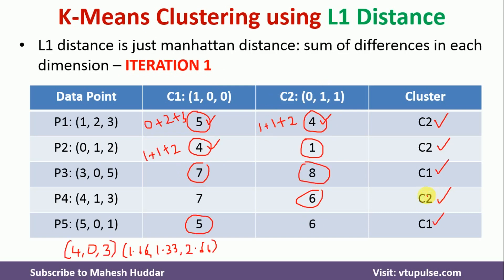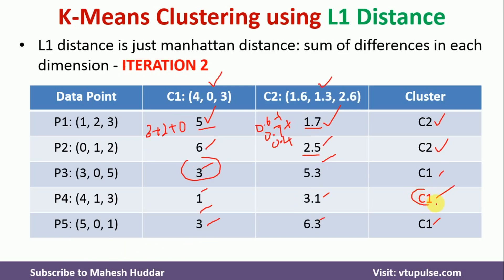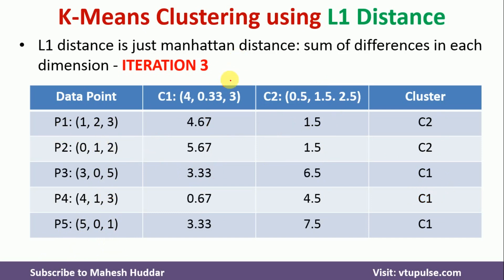Notice that P4 was previously in C2 but has now moved to C1 — there has been a movement of a data point. Hence, we must repeat the calculation until no data points move from one cluster to another. Now P3, P4, and P5 belong to C1, so we recalculate its centroid: (3+4+5)/3 = 4, (0+0+1)/3 = 0.33, (5+3+1)/3 = 3. Similarly, I calculate the new centroid for C2 using P1 and P2.